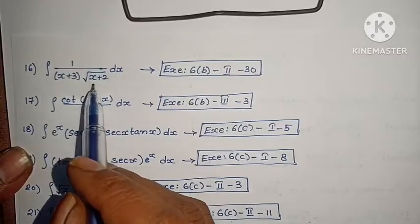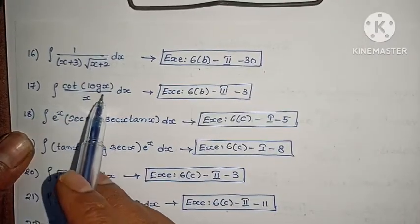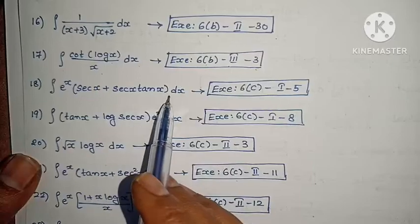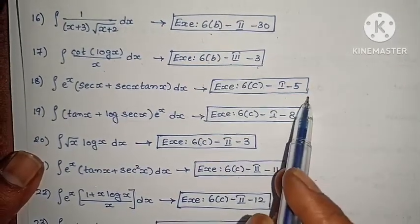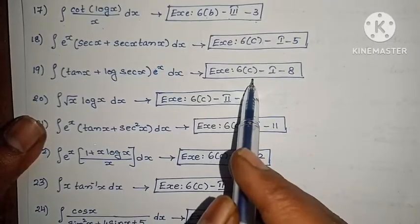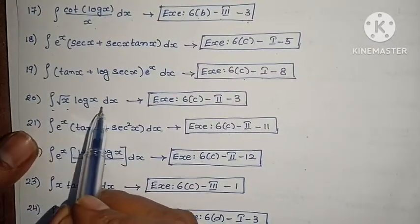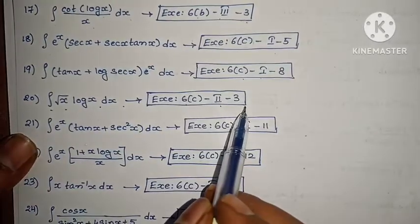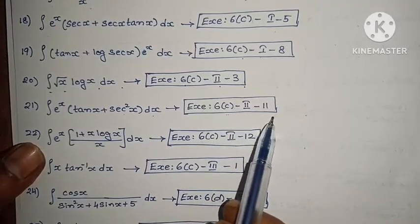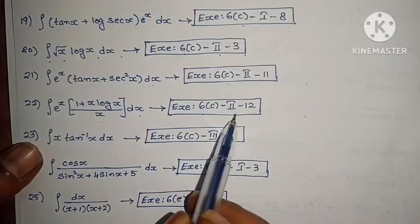Next: integral of 1/(x + ∛(x+2)) dx, exercise 6b, Roman numeral 2, 30th problem. Integral of cot(log x)/x dx, exercise 6b, Roman numeral 3, 3rd problem. Next: integral of eˣ(sec x + sec x · tan x) dx, exercise 6b, Roman numeral 1, 5th. Integral of (tan x + log|sec x|)·eˣ dx, exercise 6b, Roman numeral 1, 8th. Integral of √x · log x dx, exercise 6b, Roman numeral 2, 3rd. Integral of eˣ(tan x + sec x) dx, exercise 6b, Roman numeral 2, 11th. Integral of eˣ(1 + x·log x)/x dx, exercise 6b, Roman numeral 2, 12th.